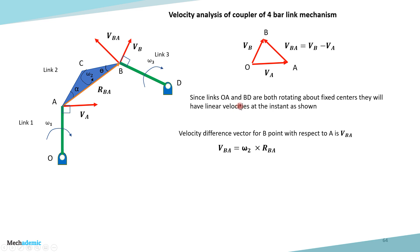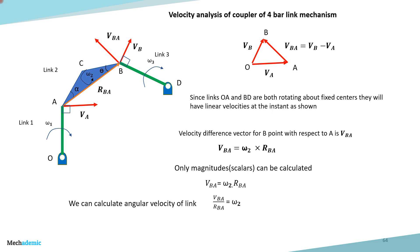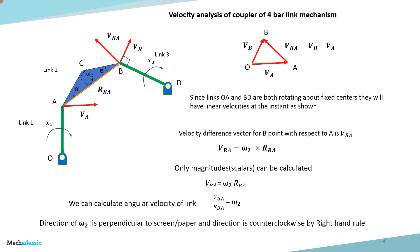Since links OA and BD both rotate about their fixed centers with angular velocities omega_1 and omega_3, both have linear velocities perpendicular to their respective links. The velocity difference vector VBA equals omega_2 cross RBA. The coupler link ABC will have angular velocity omega_2, found using the vector form equation, or in scalar form: VBA equals omega_2 times RBA. So if VBA and RBA are known, we can find omega_2. The direction of omega_2 is perpendicular to the plane, counterclockwise by the right-hand rule.